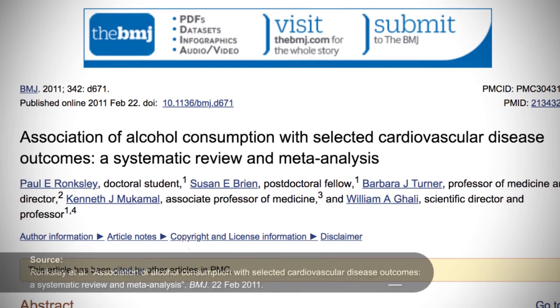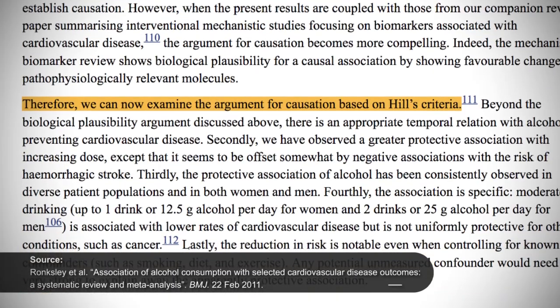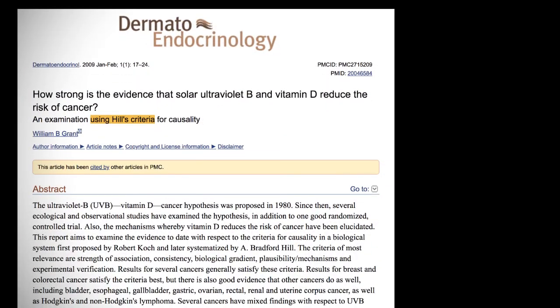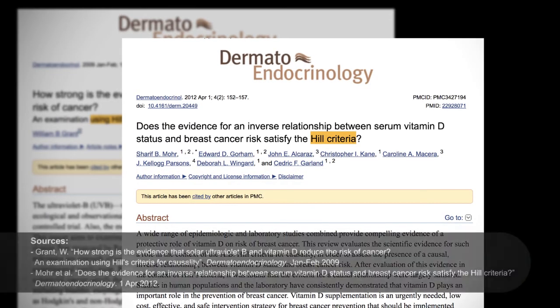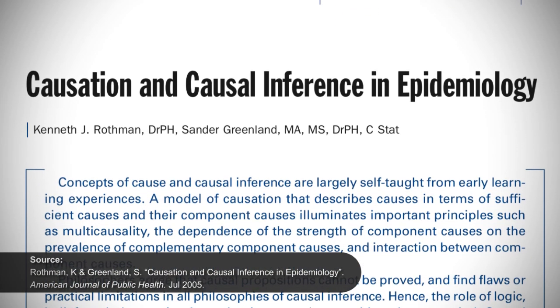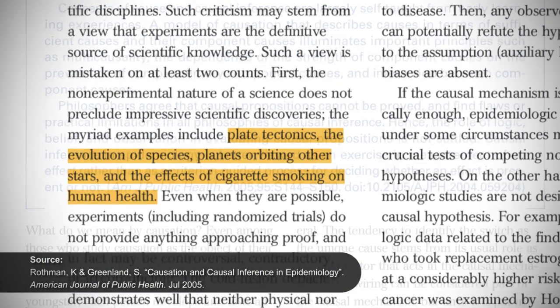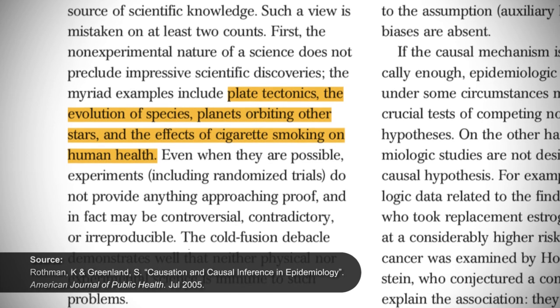These criteria have been used to establish the connections between alcohol and cardiovascular disease, the association between ultraviolet B radiation, vitamin D and cancer, and many others. Some other examples of advances in science that were made without randomized controlled trials include the effects of smoking on human health, the discovery of tectonic plates, and the evolution of species.